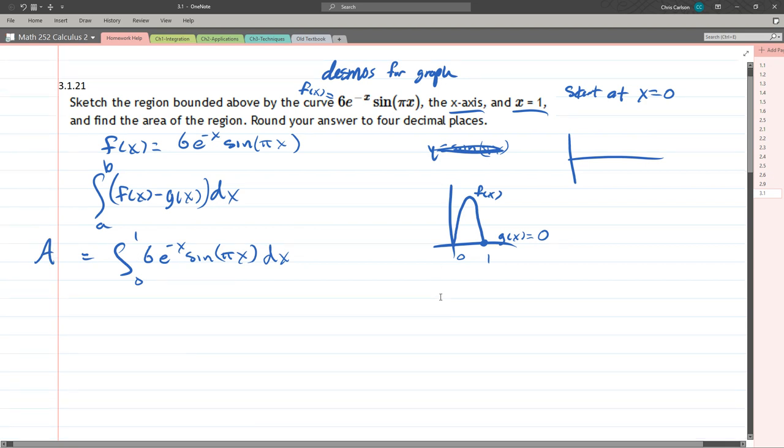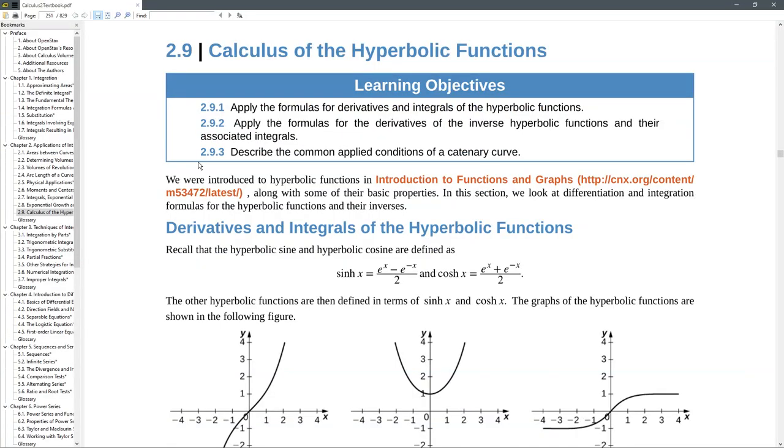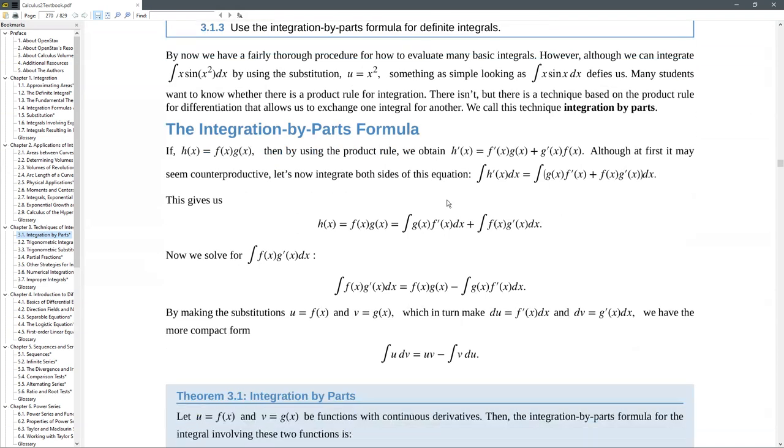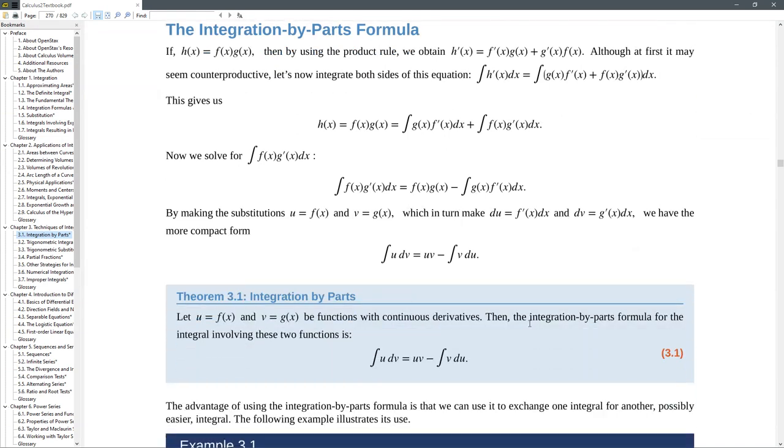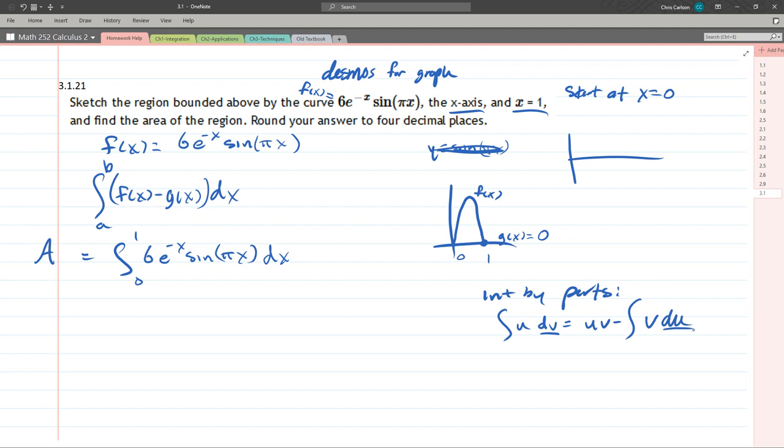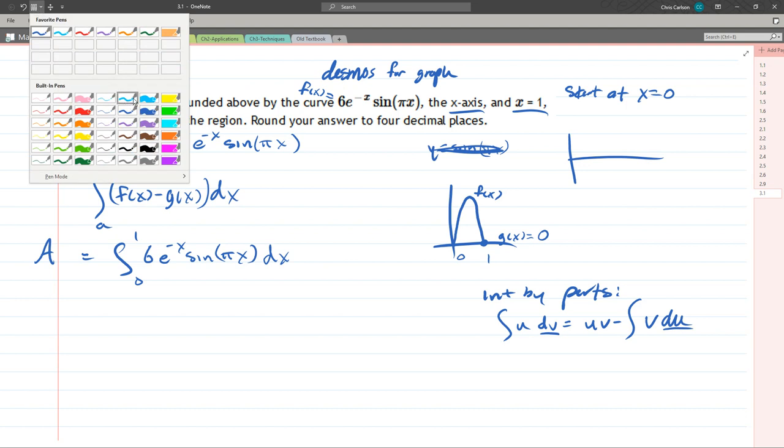3.1 is integration by parts. There's the integration by parts formula. The best version of it is right here in the blue box. I'm going to rewrite it over where we're doing our work. So it's integral u dv equals uv minus integral v du. It's important to remember that the dv and the du are just single. We have to pick u and dv.